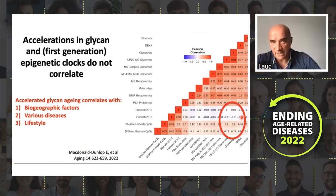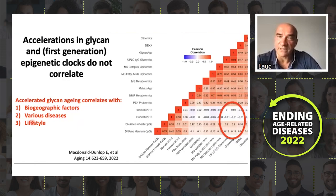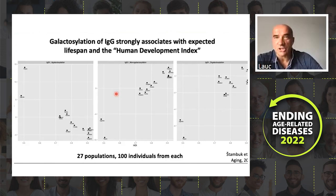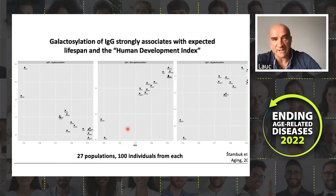We know that acceleration of glycan aging correlates with biogeographic factors, different diseases, and lifestyle. Looking at 27 different cohorts from around the world, we see they are different. But interestingly, the parameter which explains the difference most is actually expected lifespan and the Human Development Index. People living in developed countries with a larger expected lifespan will have their glycans aging more slowly, while people in less developed countries with shorter expected lifespan will have glycans aging faster.